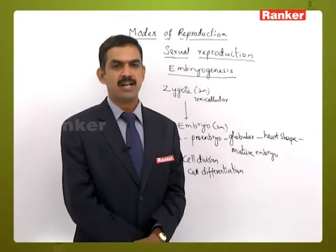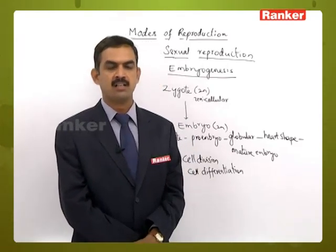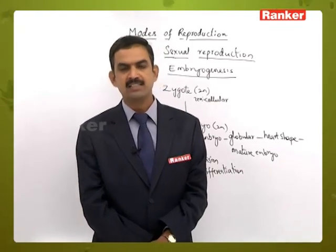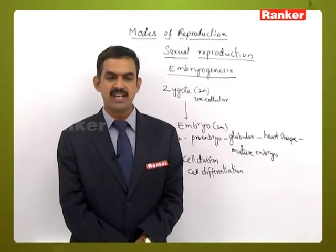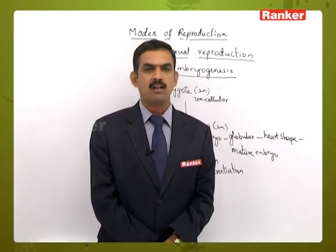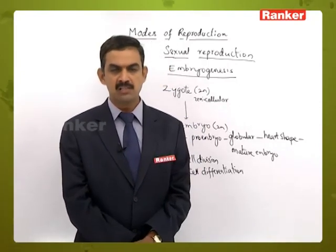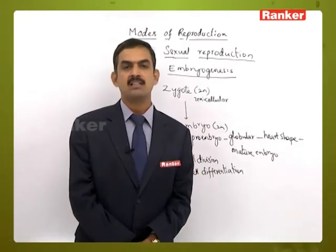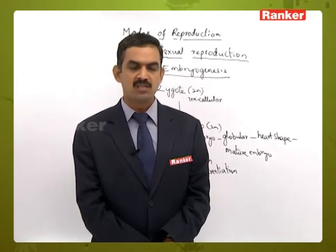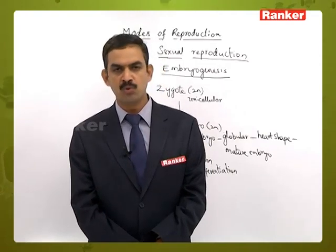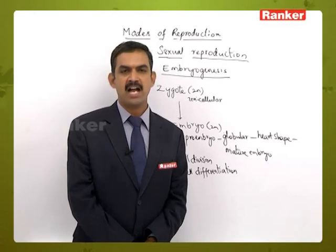Seeds normally germinate after being separated from the fruit, but there is one condition where seeds germinate while still retained in the fruit on the parent plant — this is called vivipary. Viviparous germination is observed in plants growing in mangrove areas because the saline water in such soils does not provide enough oxygen for normal seed germination. Therefore, seeds begin germinating while still attached to the parent plant. This type of character is seen in mangroves like Rhizophora, Bruguiera, and Avicennia.